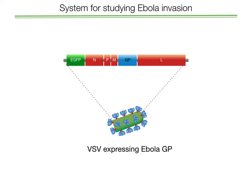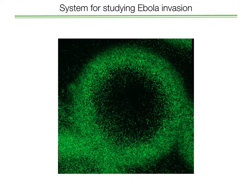This surrogate virus — what we like to think of as a sheep in wolf's clothing — allows us to study exactly how the Ebola glycoprotein mediates the invasion process. Anything we find using this system has to be confirmed using real Ebola in a BSL-4 laboratory, which we do in collaboration with our BSL-4 partner, John Dye. We've also introduced a gene into this VSV called green fluorescent protein, or GFP, which allows us to track individual cells as they become infected — those are the little green dots you can see in this slide.